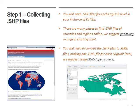Step one is collecting the shapefiles. You're going to need the shapefiles for each org unit level in your instance of DHIS2. A lot of shapefiles are available from different countries and regions — we suggest going to GADM.org. You can click the link on this page. But you might also have shapefiles for your own areas or company. If you don't, GADM is a great place to start.